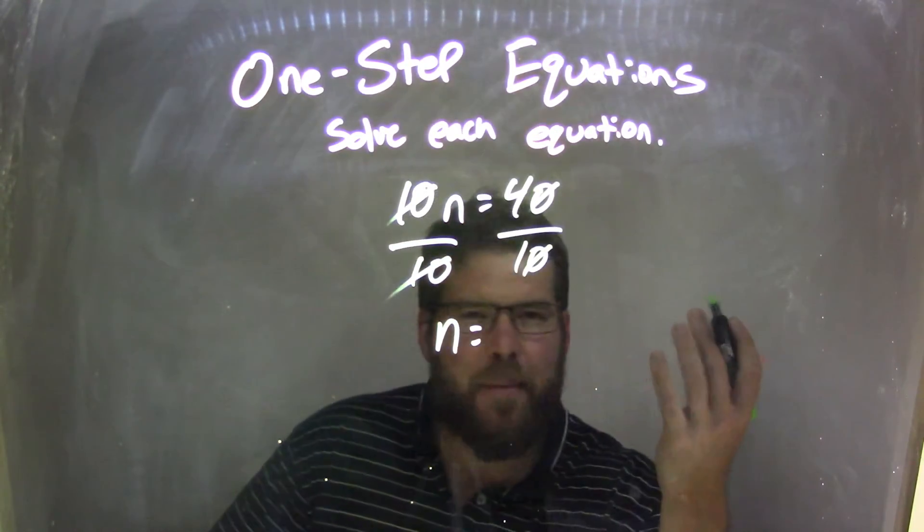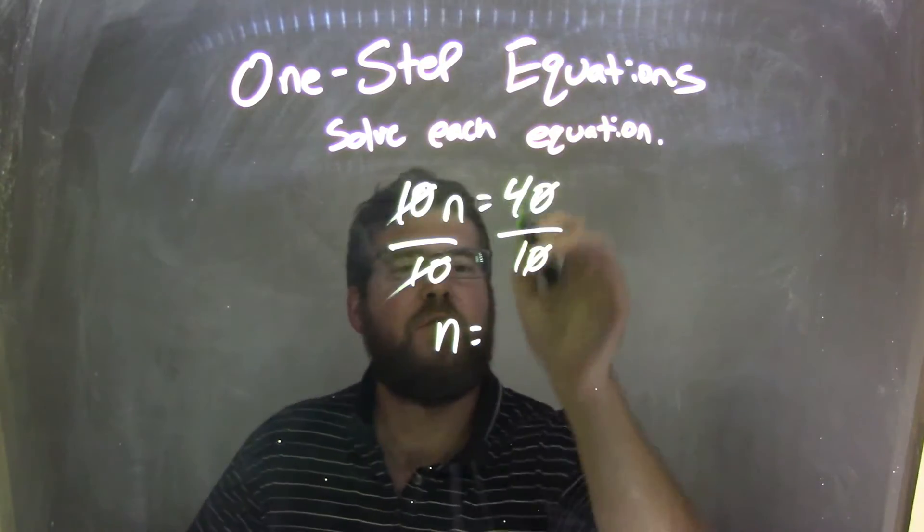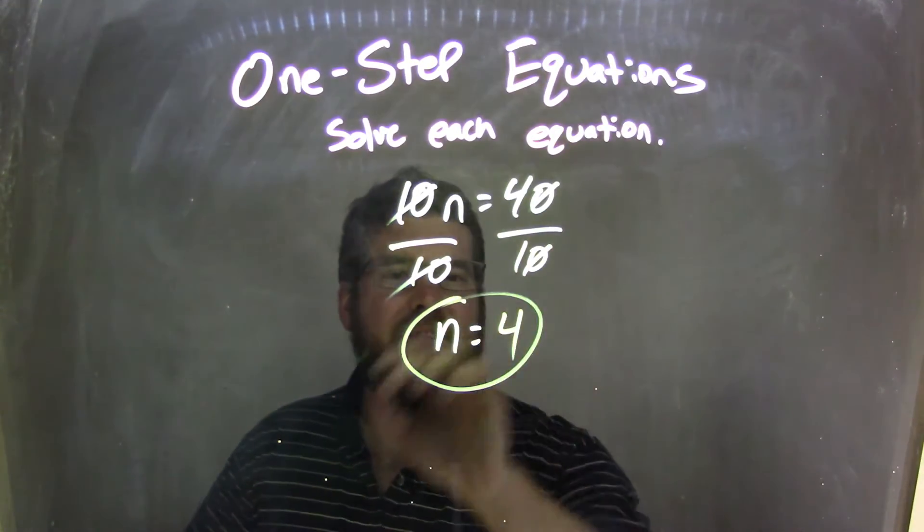Now I have 4 divided by 1. Well, any number divided by 1 is itself. So 4 divided by 1 is 4, and now I'm done. That's my final answer.